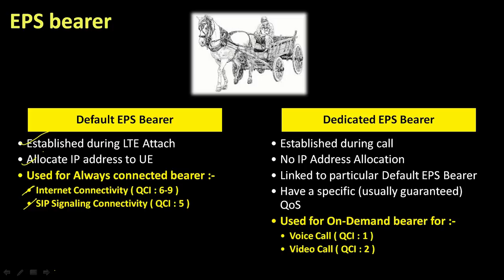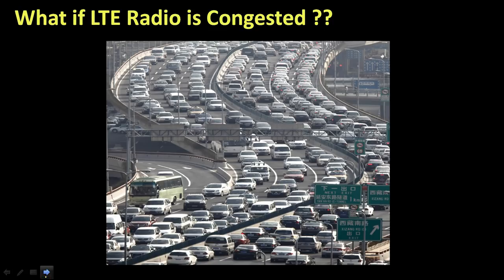The dedicated EPS bearer is a child bearer established during a call — either voice or video. No IP address is allocated to this bearer; it uses the IP of the parent default bearer. It is always linked to a particular default EPS bearer and has a specific QoS, usually a guaranteed one. It is used for on-demand bearer services such as a voice call using QCI 1 or a video call using QCI 2.